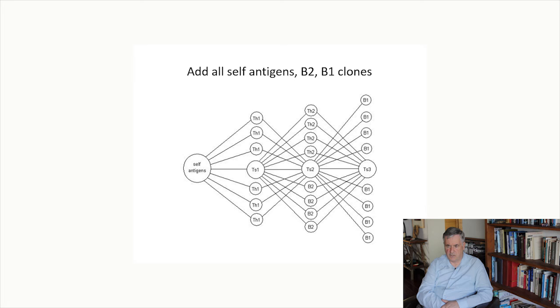TH2, TS2, and B2 clones are anti-anti-self. IgM and TS3 clones are triple anti-self. TS2 is the central regulating clones in the system. And within this picture, the B2 population are selected to have V regions that are similar to the V regions on that TS2 population.